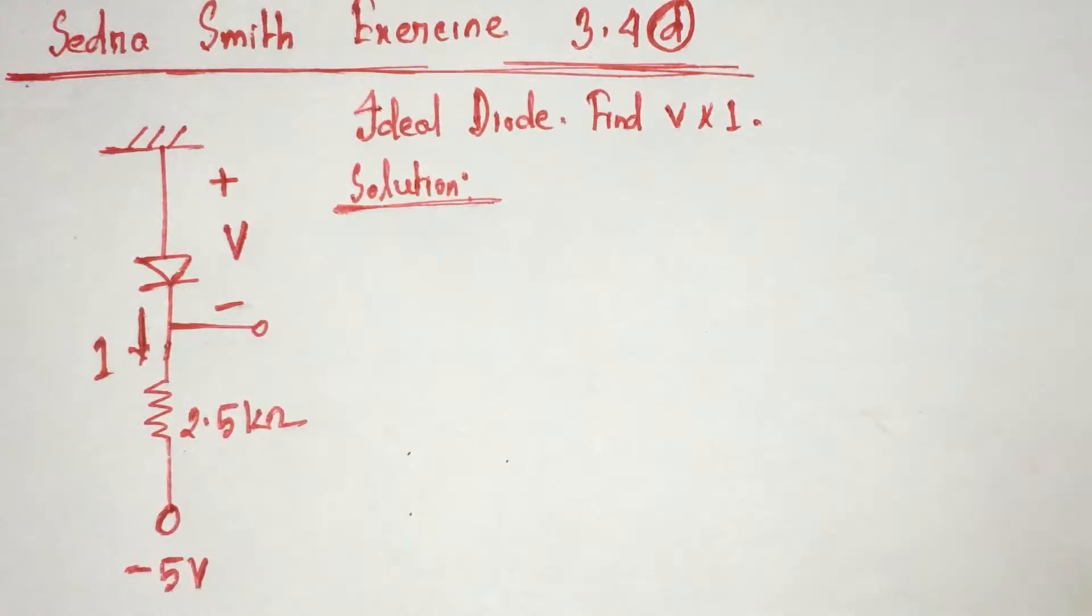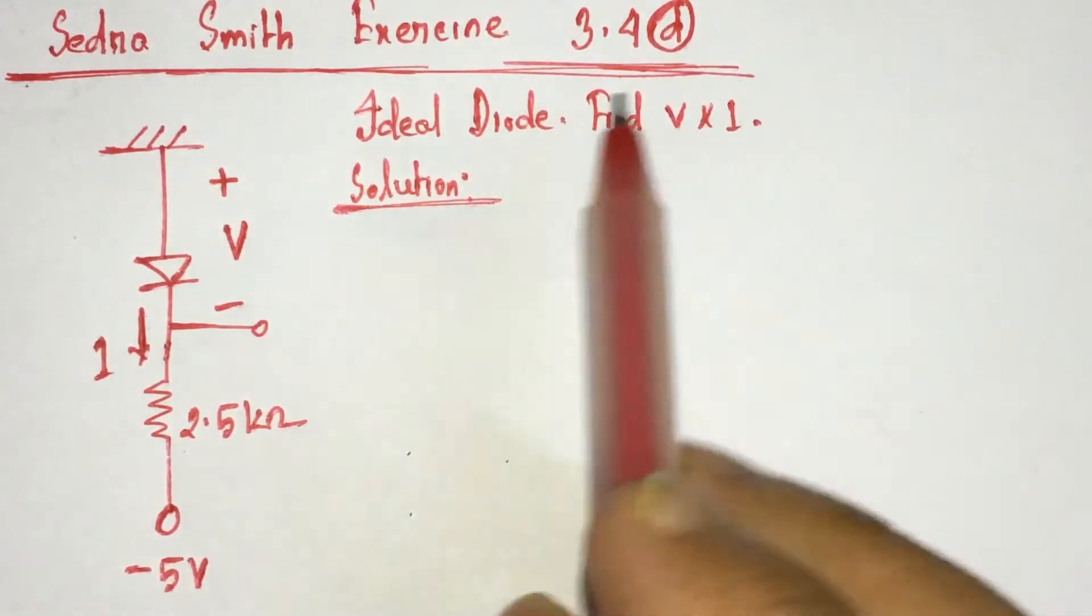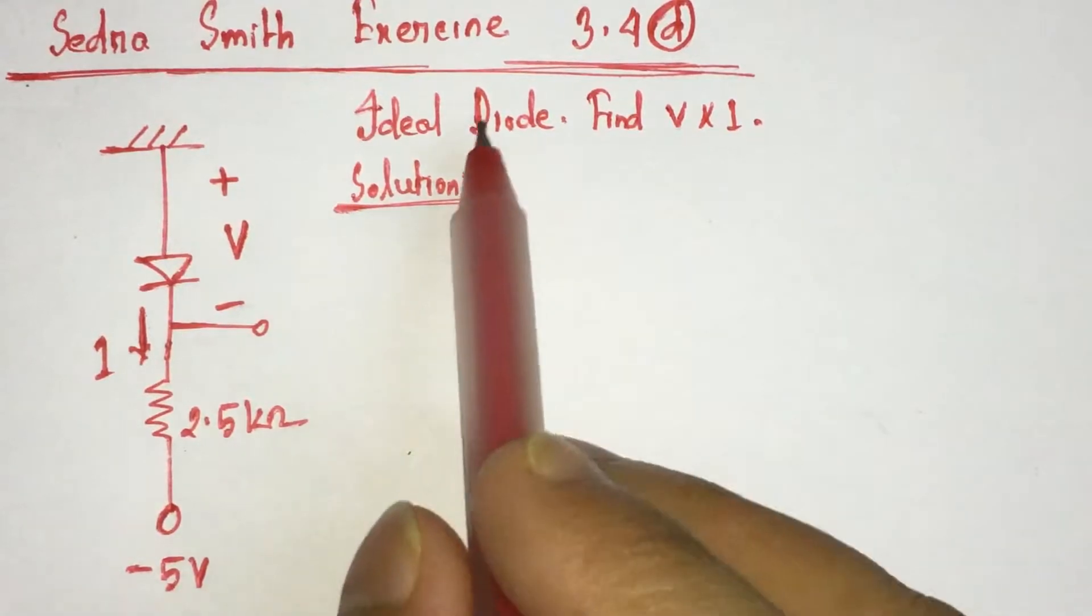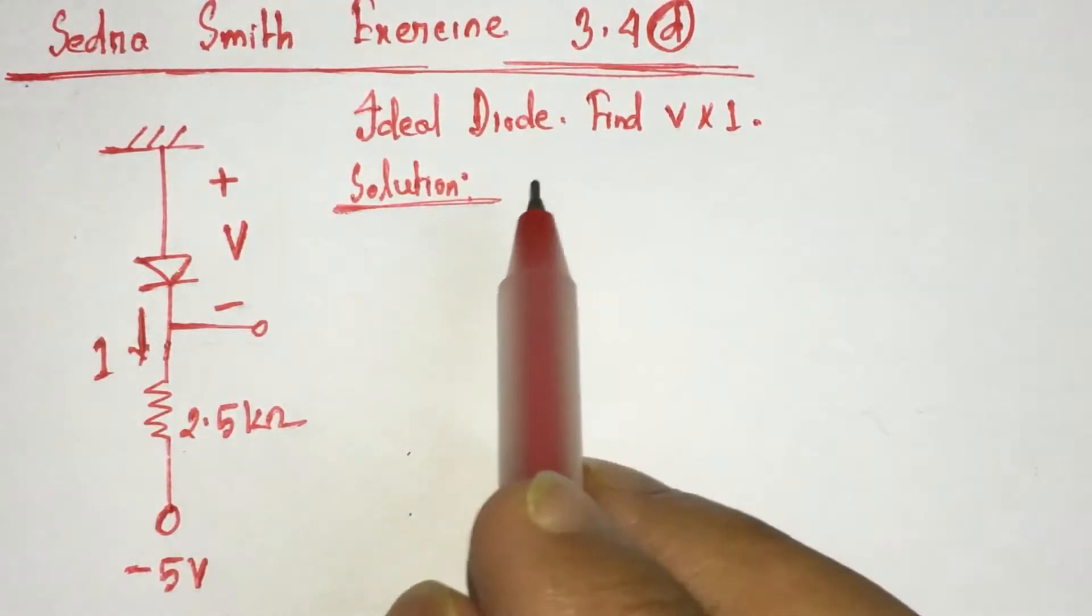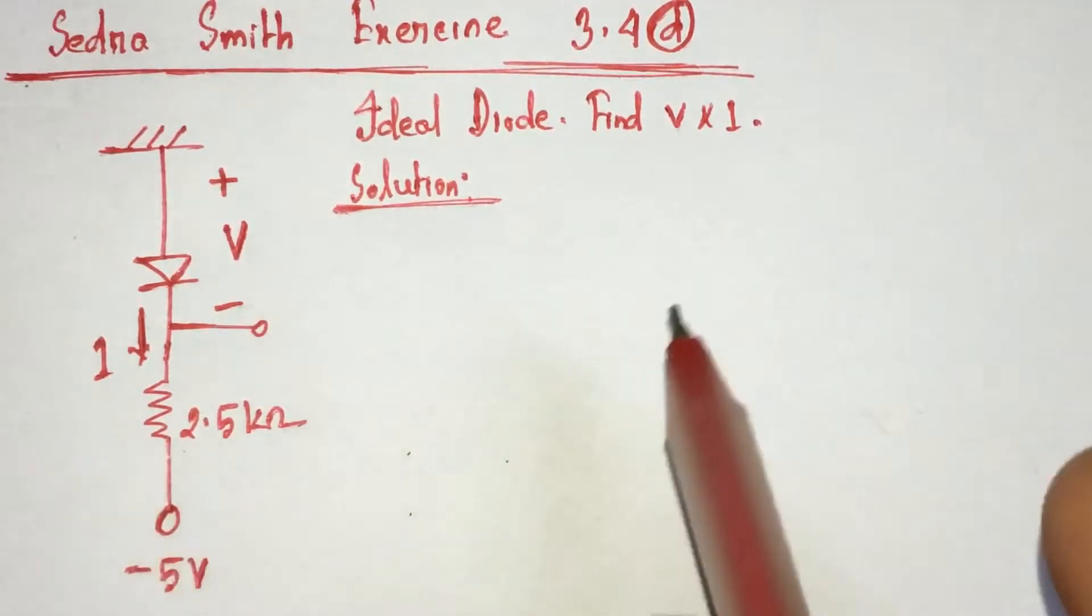Hi viewers, today we will solve Exercise 3.4D from Cedra Smith. This is the ideal diode and here we have to identify the voltage V and current I.